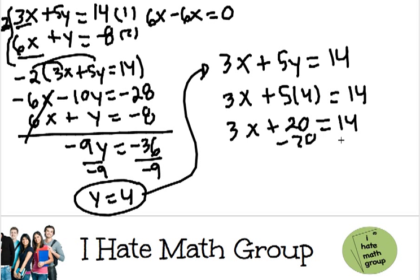Minus 20 from both sides. I'm almost done. 3x equals 14 minus 20, which is negative 6, divided by 3. This equals negative 2.